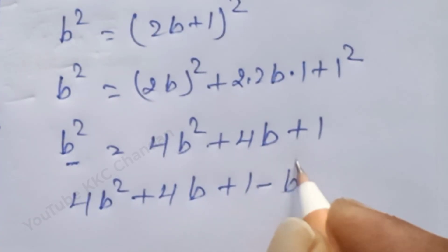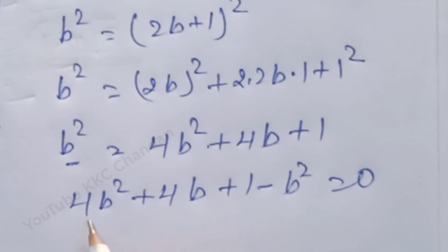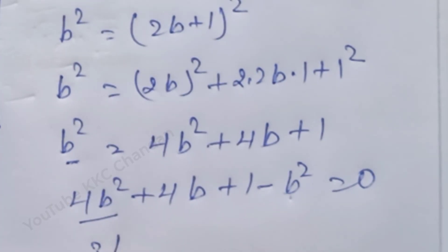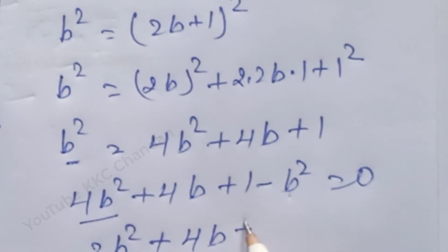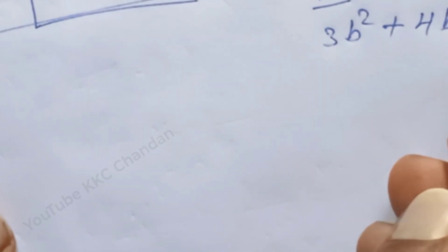Bringing b squared to the other side: 4b squared plus 4b plus 1 minus b squared is equal to 0. Combining like terms, 3b squared plus 4b plus 1 is equal to 0. This is now in the form of a quadratic equation, so we will apply factoring.